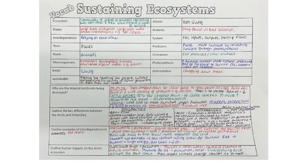For ecosystems we need to know some terminology. An ecosystem is a community of plants and animals interacting with each other and their environment in order to survive. A biome is a large-scale ecosystem — a large area with similar characteristics. We also need to know that there are biotic (living) and abiotic (non-living) elements to an ecosystem. For example, rocks would be abiotic; plants and animals would be biotic.